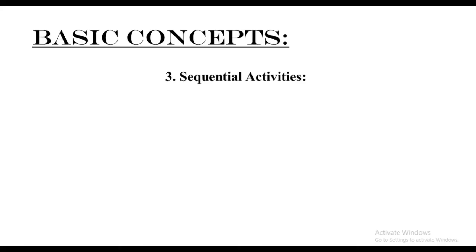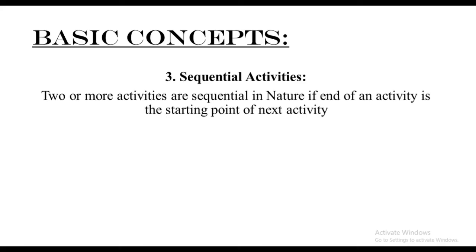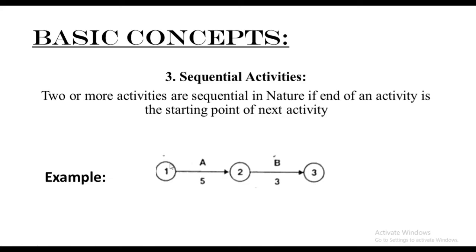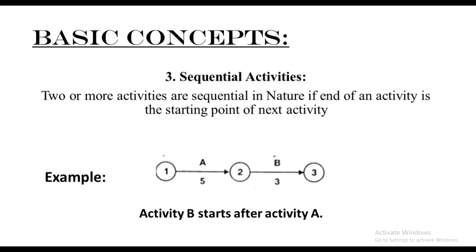Third: sequential activities. Two or more activities are sequential in nature if the end of an activity is the starting point of the next activity. For example, in the diagram we have the starting point of A which is node one, the end point of A which is node two, and in sequential order the end of A becomes the starting point of B, and event number three is the end point of B. So activity B starts after activity A. The starting point of the second activity will always be the end point of the first activity.